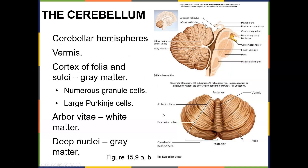The cerebellum is the cauliflower-shaped structure. You have one cerebellum, but it has a little vermis which separates the lobes. You have an anterior lobe, a posterior lobe, and two cerebellar hemispheres. The purpose of the cerebellum is quite important because it really helps with balance and coordination.